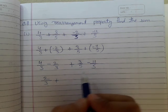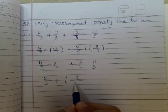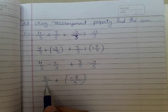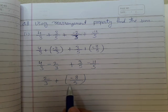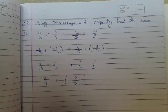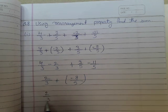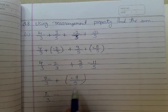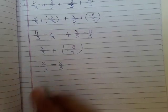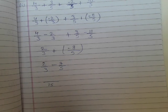So 3 - 11 = -8, with denominator 5. Now we have 2/3 + (-8/5). Removing the bracket gives 2/3 - 8/5. Now we take the LCM of 3 and 5, which is 15.